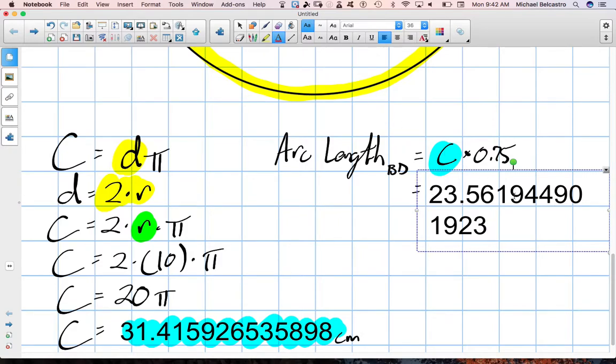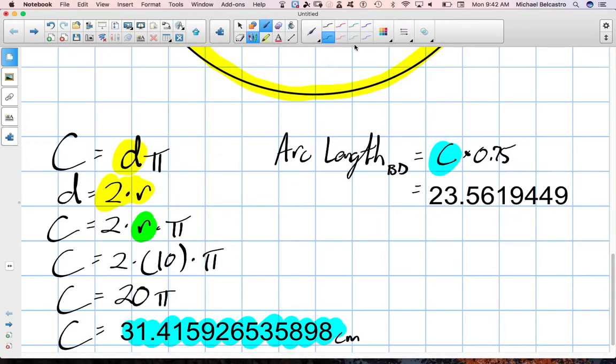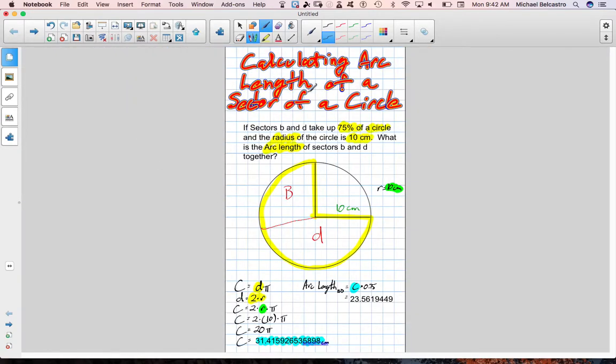I like this copying and pasting feature. Here we go. And we don't need to be that exact. So there we go. It is 23.56 centimeters approximately. Okay? So there's your answer for calculating arc length of a circle, of a sector of a circle.